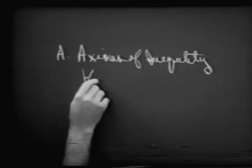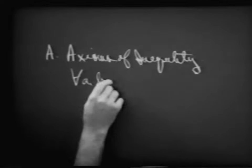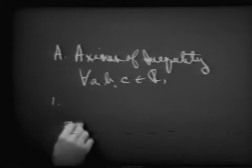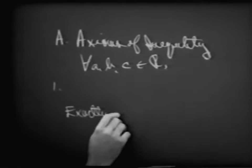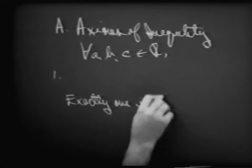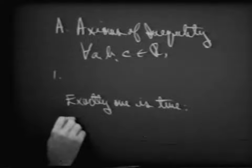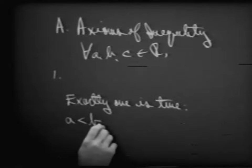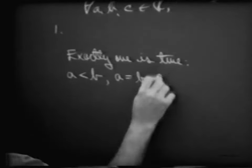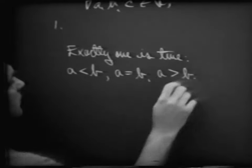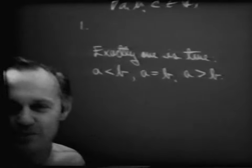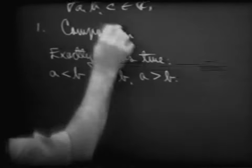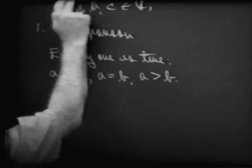For every real number A, B, and C belonging to the set of real numbers, one of the first axioms we'd like to mention is that exactly one of the following is true. Given numbers A and B, either A is less than B, or A is equal to B, or A is greater than B. We give this axiom the name: the comparison axiom of inequality.